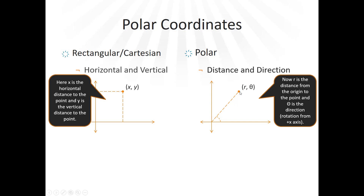The distance you can think of as the radius. And then the angle — theta — is just the standard position angle. Zero is the x-axis, positive rotation is counterclockwise, and clockwise would be negative rotation. So instead of using x and y as your coordinate, you would write it as r, theta.